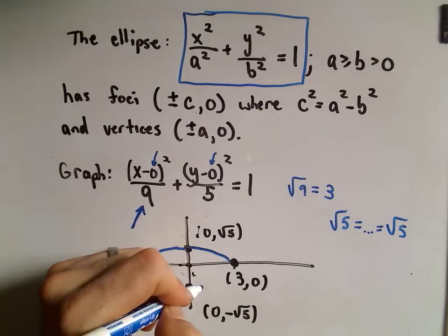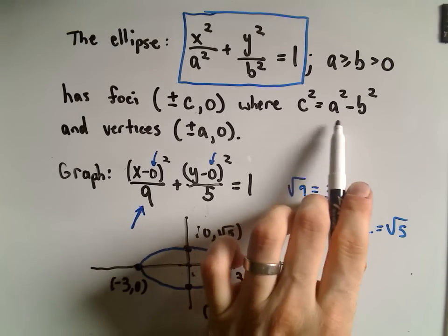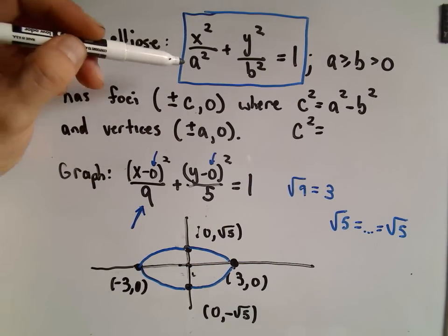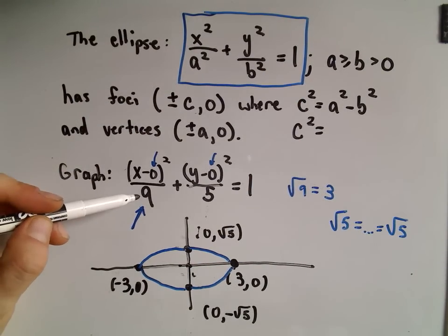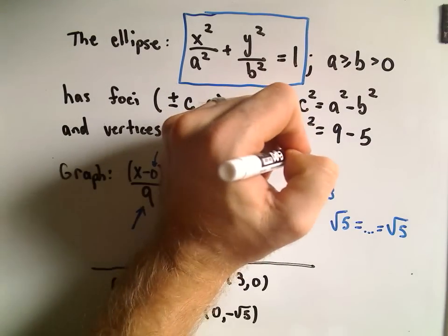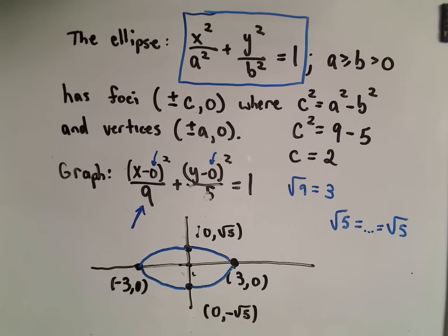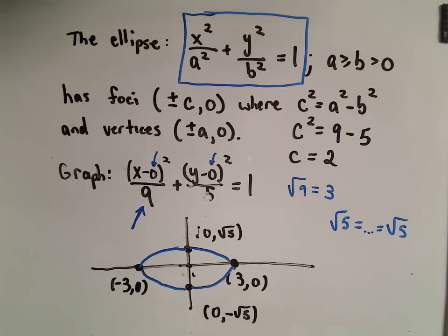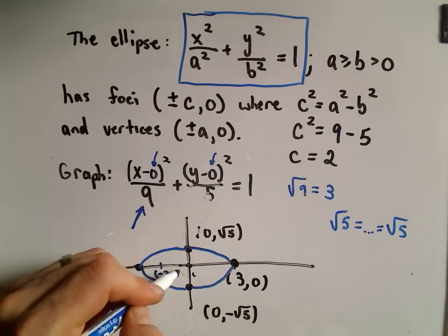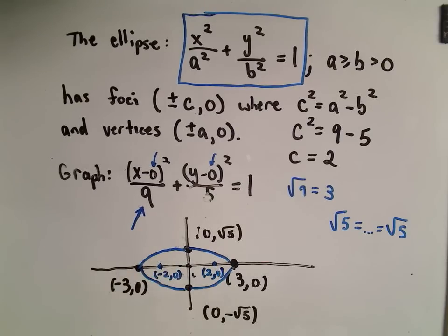To find the foci, we use c squared equals a squared minus b squared. Here a squared is 9 and b squared is 5, so c squared equals 4, meaning c equals 2. From the center, going left and right c units places the foci at (−2, 0) and (2, 0).